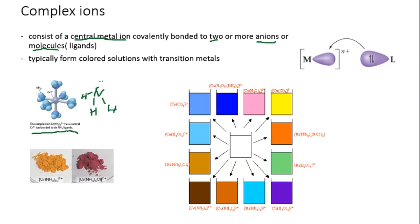Chromium hexaamine is a gold or orange color. When you replace one of the amines with a chloride, the color changes from orange to magenta. The metal is electron-deficient and needs electrons; the ligand has an accessible electron pair that gets shared or coordinated to the metal — that's the coordination bond between the metal and the ligand.